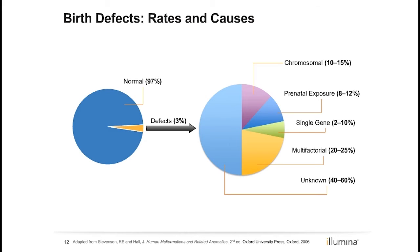We are now about to delve into descriptions of genetic syndromes. I want to take a moment to remind you that most pregnancies — approximately 97% — are without birth defects and genetic syndromes. Of the 3% of pregnancies with birth defects, the majority, 40 to 60%, are from unknown causes. When considering chromosomes and single-gene conditions, we can potentially utilize genetic screening and testing to provide answers in this subset. Moving forward, we will primarily be focused on the 10 to 15% of cases of birth defects caused by chromosomal changes.